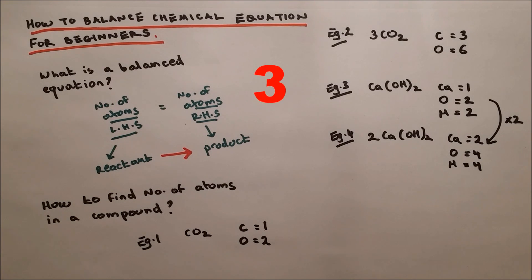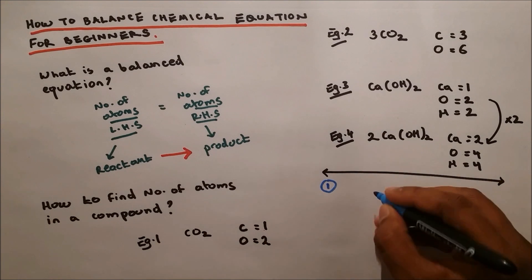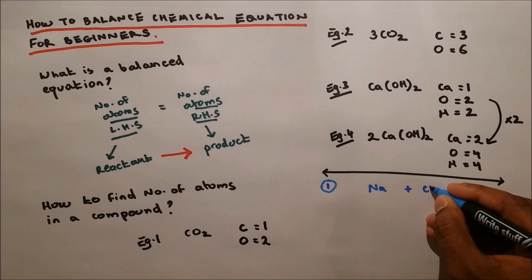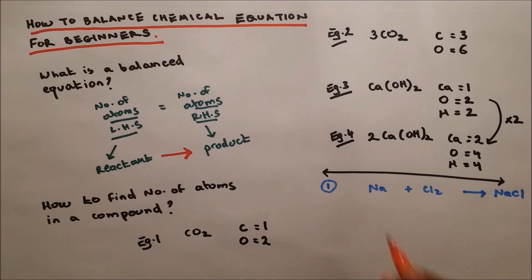Now I'm going to tell you how to balance an equation. Example one: sodium plus chlorine forms sodium chloride, Na + Cl2 → NaCl. We have one sodium on each side, so that's perfect. Two chlorine on the left, but one chlorine on the right. We have a problem. We have to make this two.